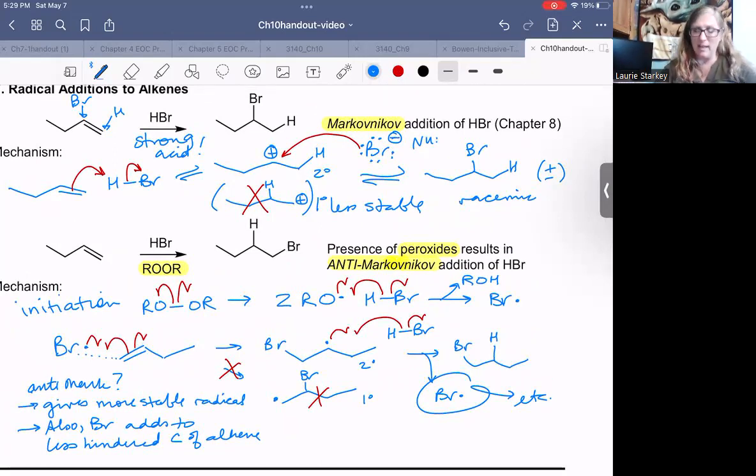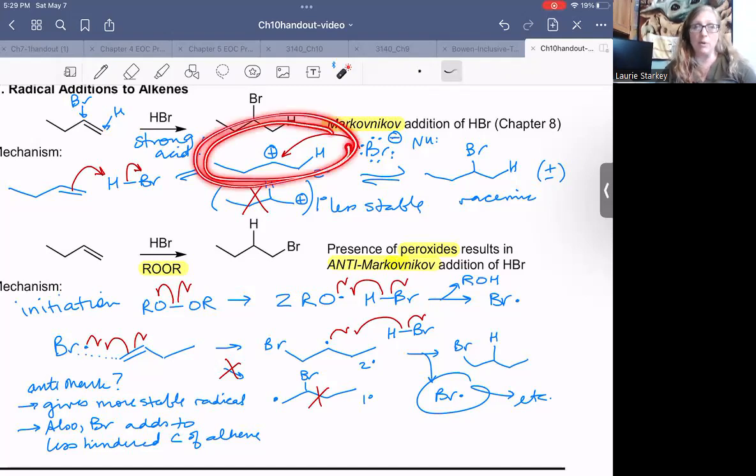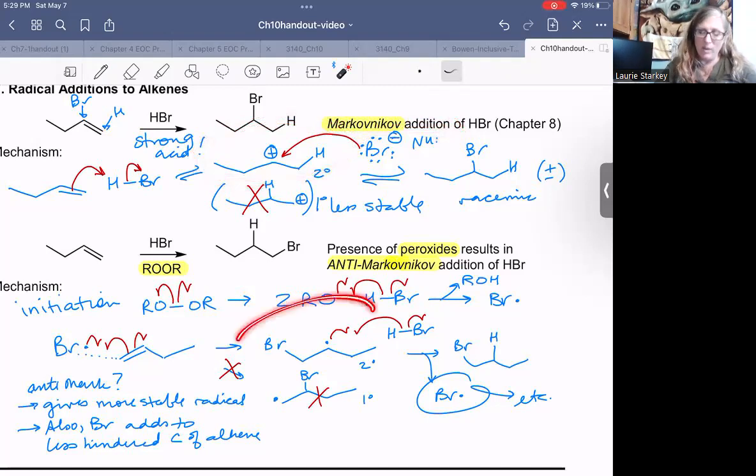So our mechanisms are completely different in the presence of peroxides because radicals are present. And so what we're looking at without peroxides is who's the most stable carbocation that leads to the Markovnikov product with peroxides. We're saying who's the more stable radical? That's what leads to our product or anti-Markovnikov product. So just want to make sure you had a good background and mechanism for that explains where that comes from.